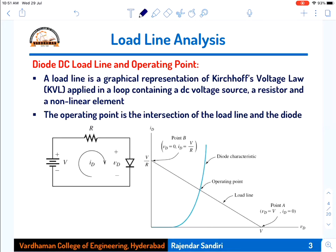A DC load line is a graphical representation of Kirchhoff's voltage law applied in a loop containing a DC voltage source, a resistor, and a non-linear element. This circuit has a DC voltage source, a resistance, and a diode. The voltage source and resistance are derived from the linear circuit by applying Thevenin's theorem.